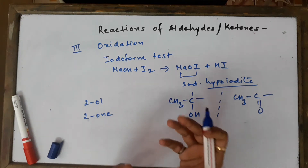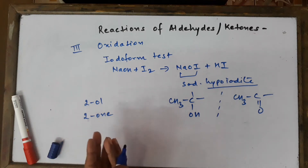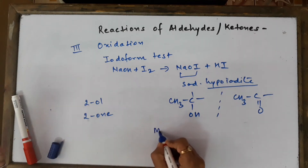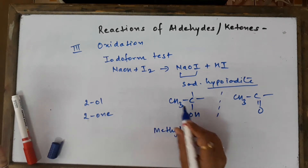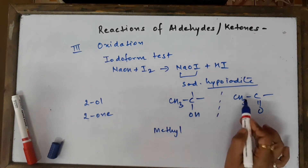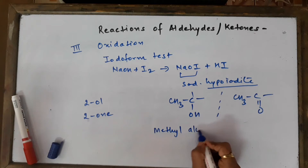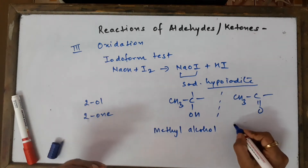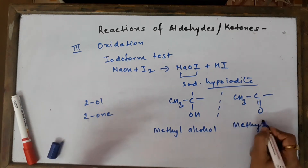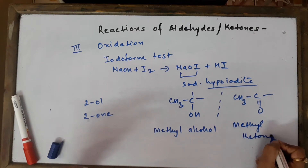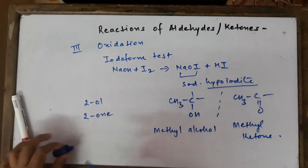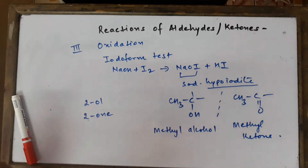The observation in the Iodoform test is a yellow precipitate of iodoform. This test is used as a distinguishing test for detecting the presence of methyl alcohols and methyl ketones. If you perform the Iodoform test and get a yellow precipitate, you can confirm the compound is a methyl alcohol or a methyl ketone.